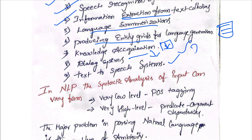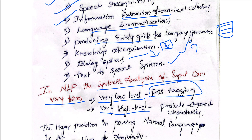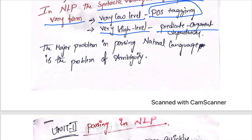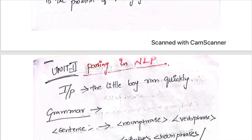An important point in NLP: syntactic analysis of input can vary from very low level to very high level. At the very low level, we consider parts-of-speech tagging; at the very high level, we consider predicate argument dependencies. The major problem in parsing natural language is the problem of ambiguity — having multiple meanings for one word.